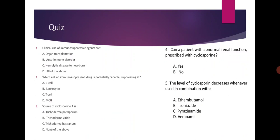Question 2: Which cell is an immunosuppressant drug potentially capable of suppressing? Options: D cell, leukocyte, T cell, or MHC. The correct answer is T cell.